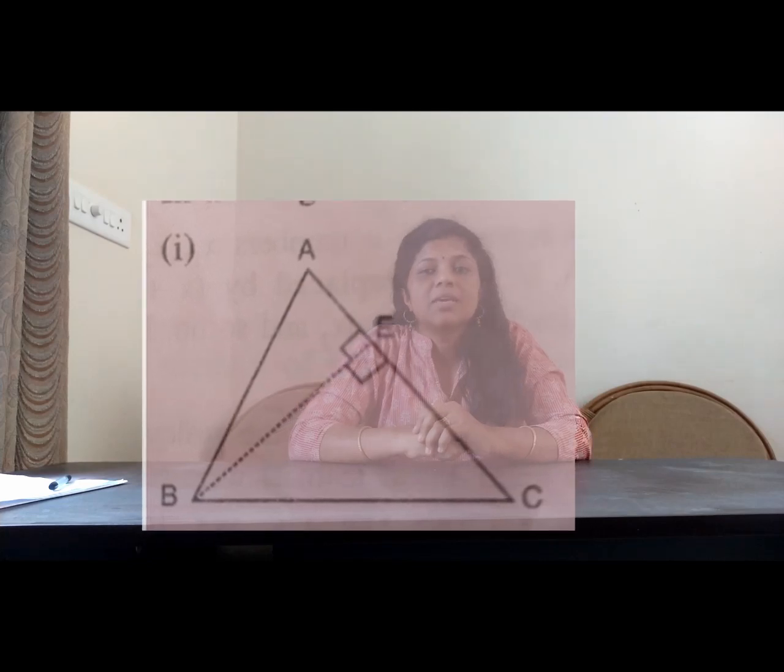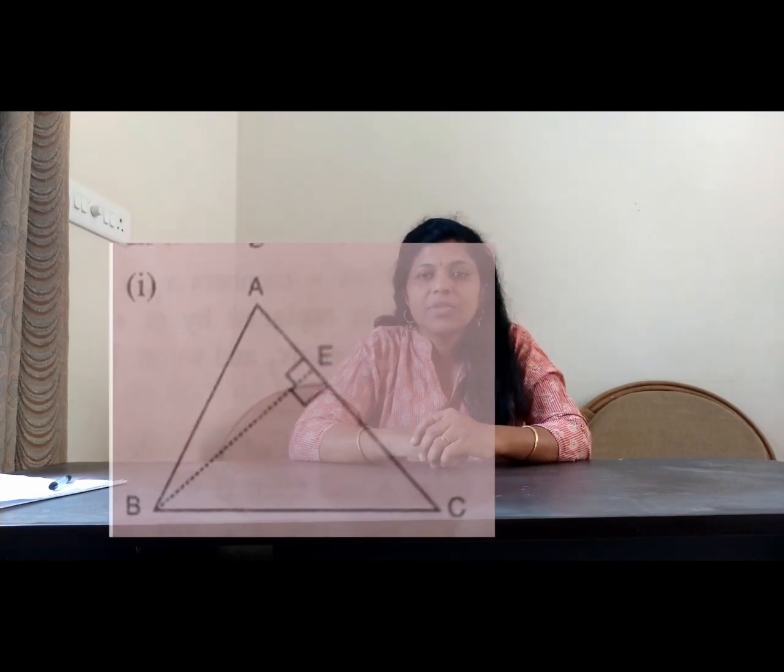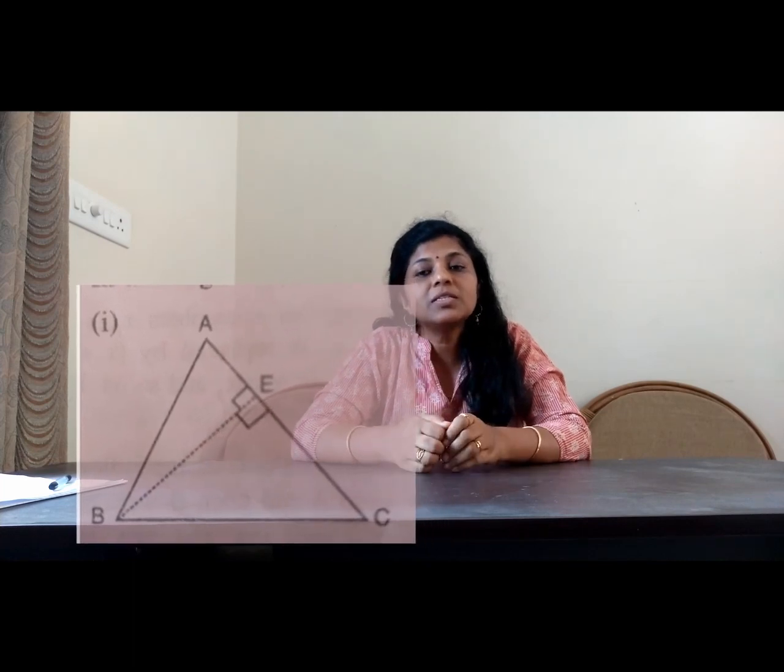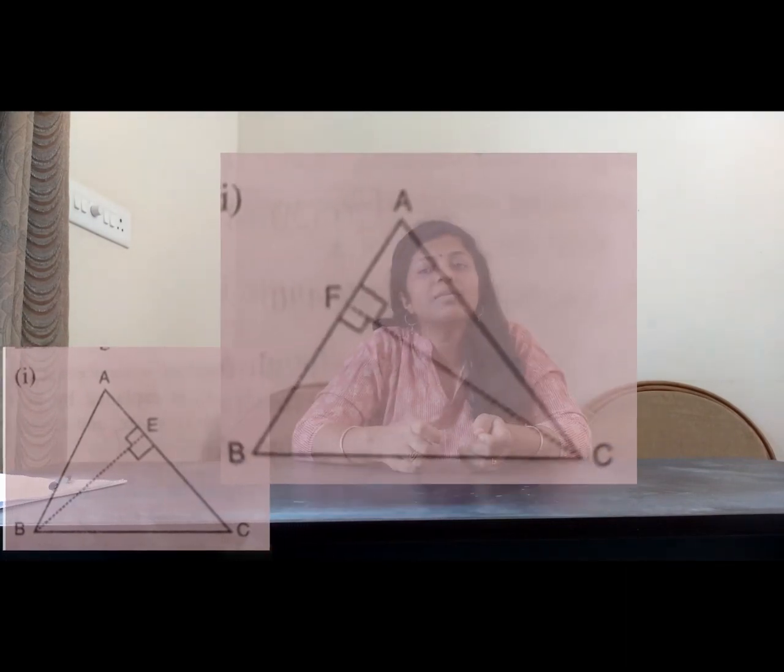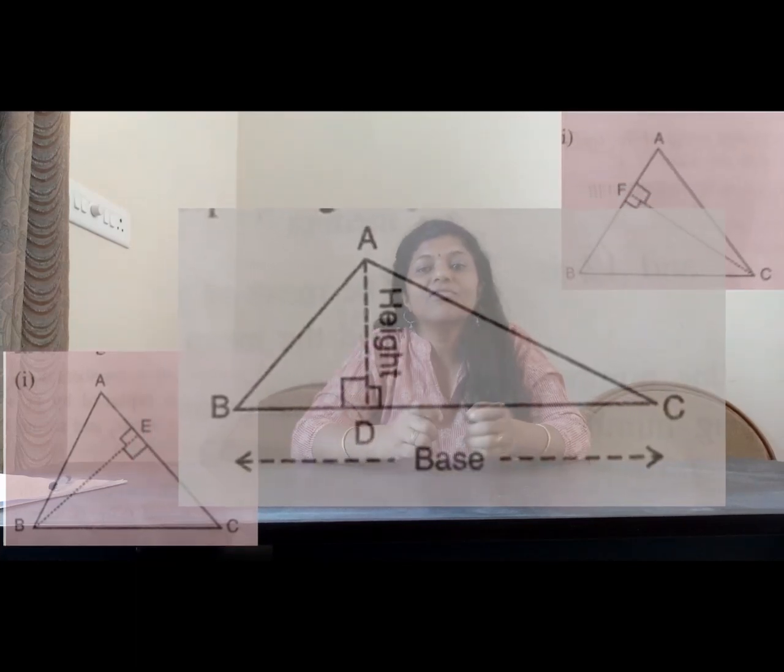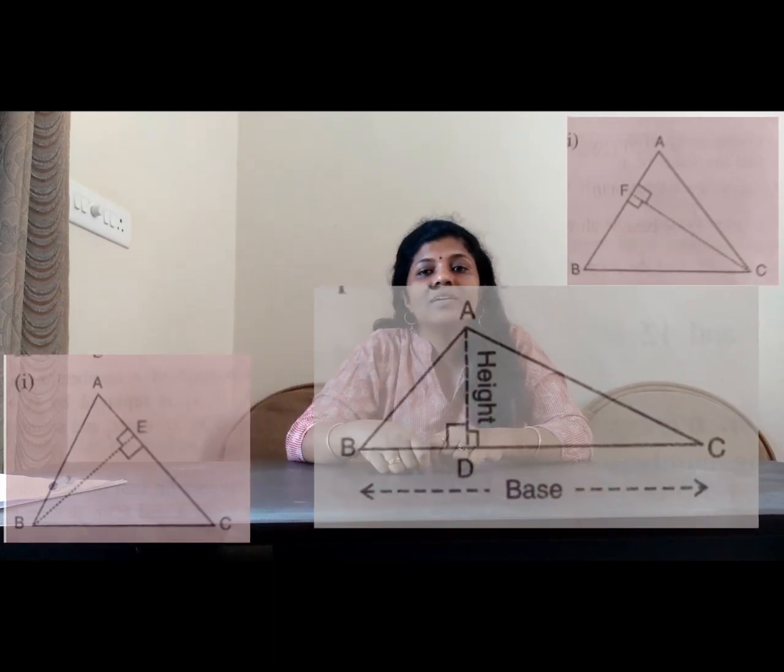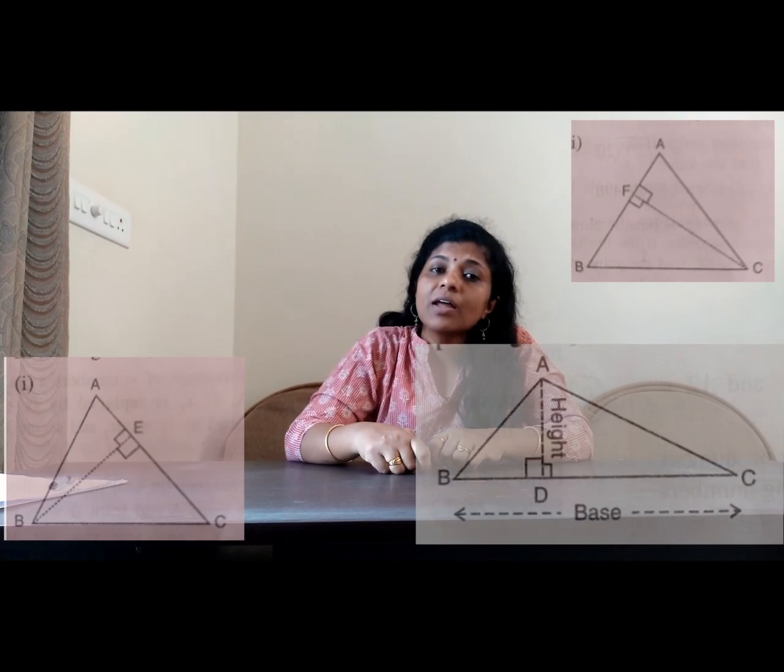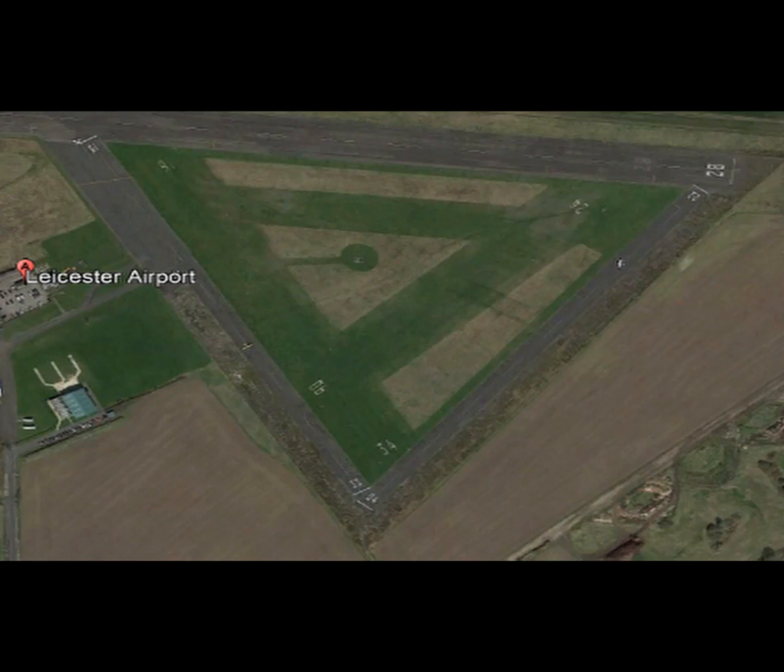BC is the height. B is the base. Look at this figure. If A is the base, then AD is the height. But, there are other cases. Say, you are buying a triangular plot. You need to find the perimeter and area of this plot. But, here you cannot use a formula half BH because we know only the length of the plot and not the height.